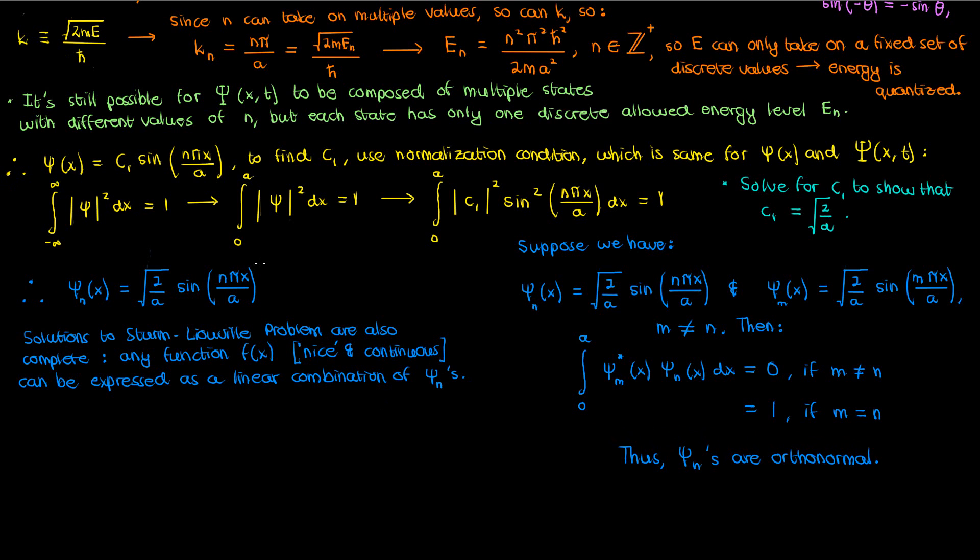Anyway let's now go back to our psi sub n from before. Any value of the positive integer n would still allow my small psi to satisfy the time-independent Schrödinger equation and the associated boundary conditions and the normalization condition. As a result there are infinitely many small psi's that satisfy our infinite square well problem.